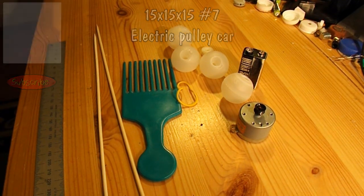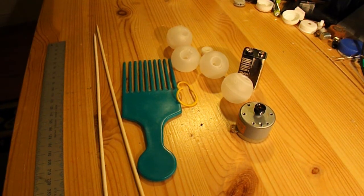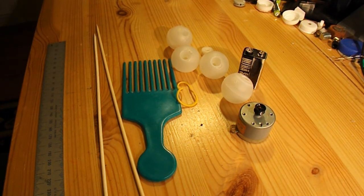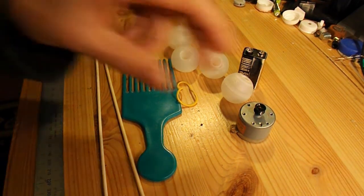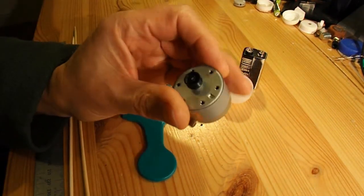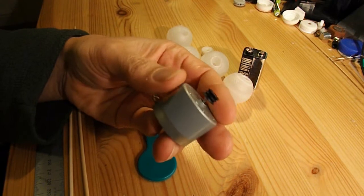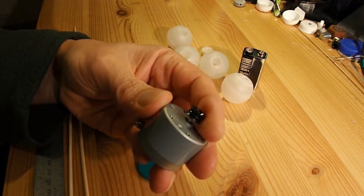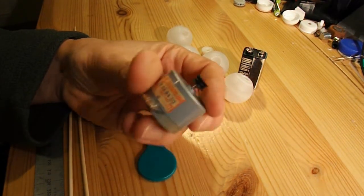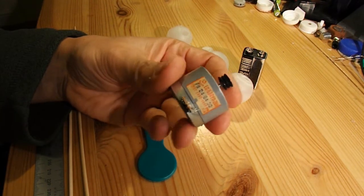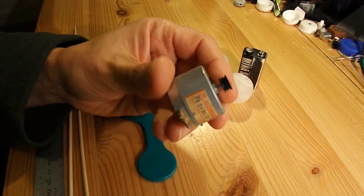Been rummaging around in my reclaimed bits and pieces box, found this electric motor. It's actually got a pulley on it already, which is quite handy. I'm pretty sure this has come out of a tape cassette player.